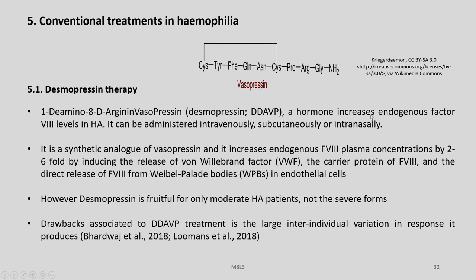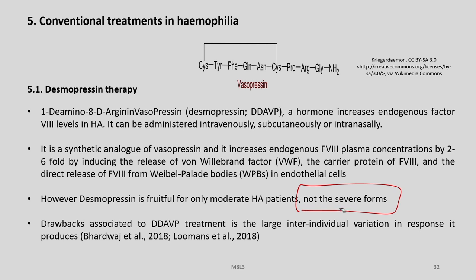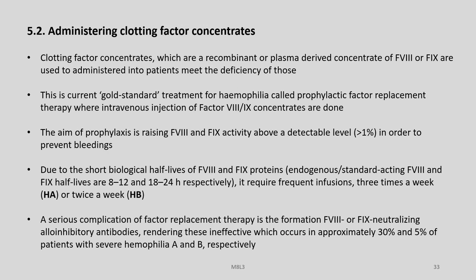Desmopressin is a synthetic analog of Vasopressin and it increases endogenous factor 8 plasma concentrations by 2 to 6 fold by inducing the release of von Willebrand factor, the carrier protein of factor 8, and the direct release of factor 8 from Weibel-Palade bodies in endothelial cells. However, Desmopressin is effective only for moderate Haemophilia A patients and not for those having severe form of the disease. There are several drawbacks associated with DDAVP treatment, particularly large inter-individual variation in response.